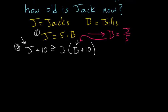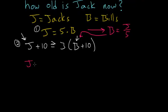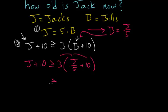So the equation becomes J plus ten is greater than or equal to three times J over five plus ten. And now distributing the three to each of these, we have three J over five plus thirty and the left hand side is still J plus ten.